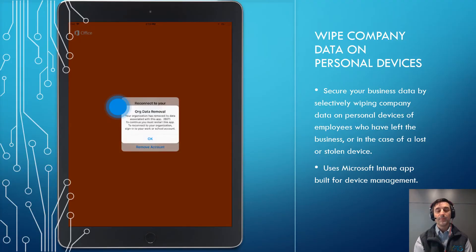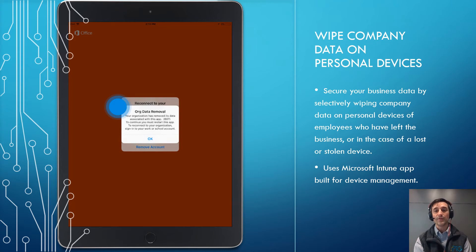Another great feature of Microsoft 365 is that it comes with Microsoft Intune. Intune is an app built for device management, and what it enables you to do is wipe company data on personal devices like mobiles and tablets. So if someone suddenly leaves your company, you can take your company data back off their device. Or if someone leaves their tablet at a coffee shop and it gets stolen, it gives you the ability to wipe the data and protect it so it doesn't fall into the wrong hands.